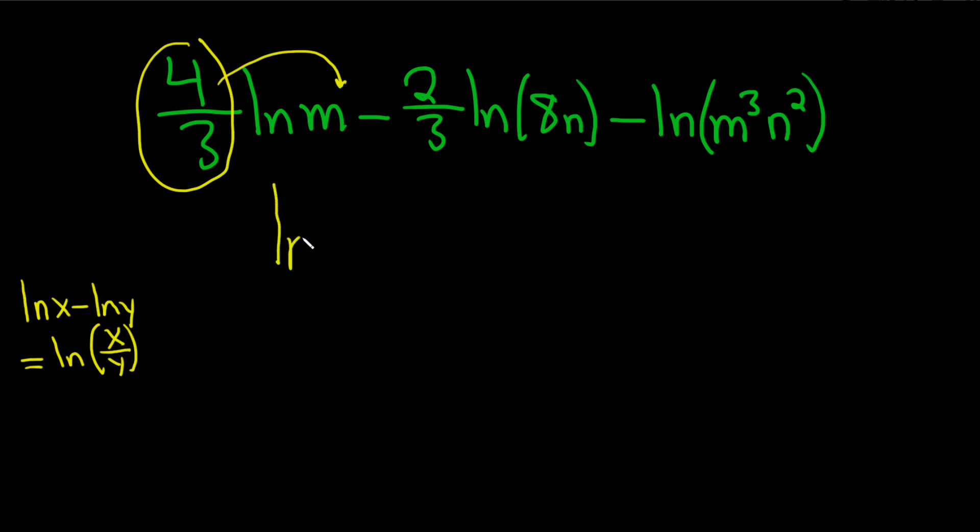So this will become the natural log of m to the four-thirds. I'm going to put this in parentheses just for some added clarity. This is called the power rule.